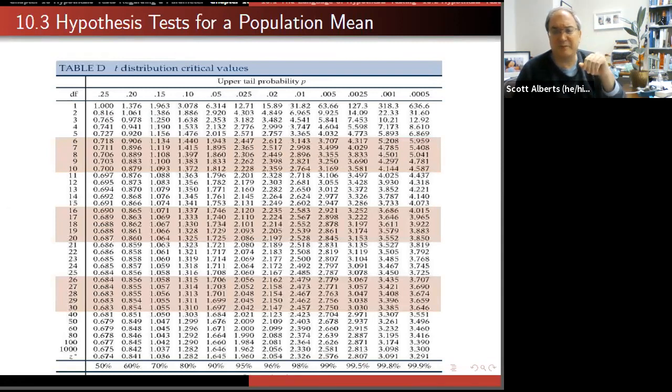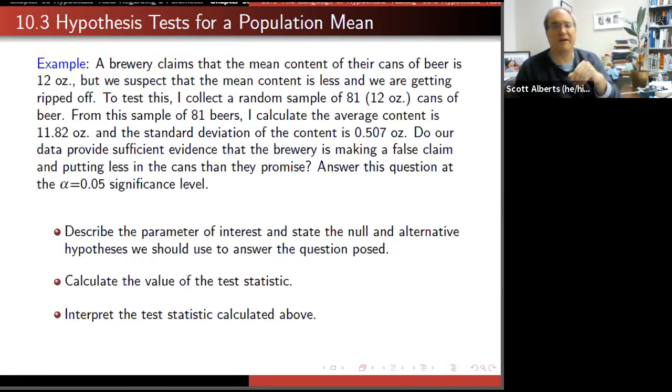The t distribution starts to look like z as your sample size gets big. There's a table that you can look it up. We're going to use StatCrunch to calculate all of this for us.